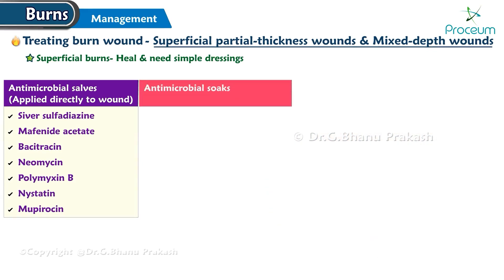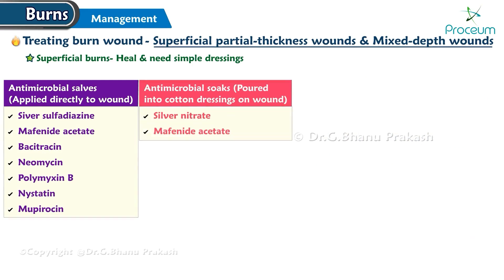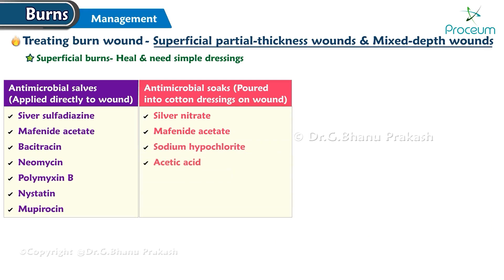Antimicrobial soaks are generally poured into cotton dressings on the wound. These include: silver nitrate, mafenide acetate, sodium hypochlorite, and acetic acid.